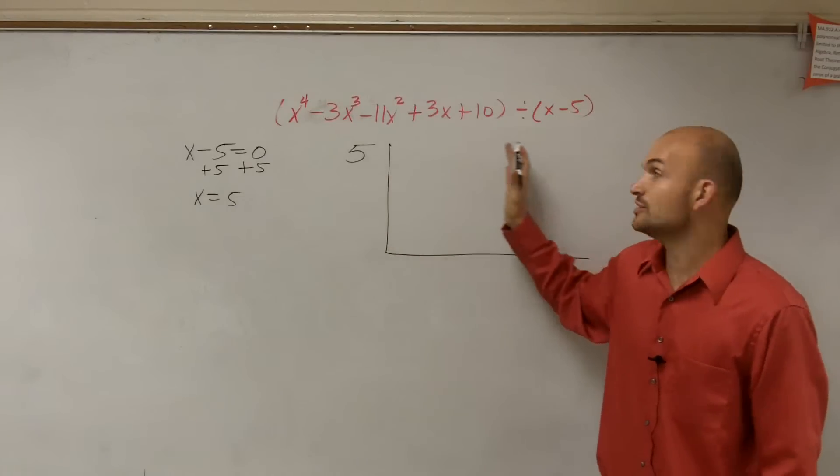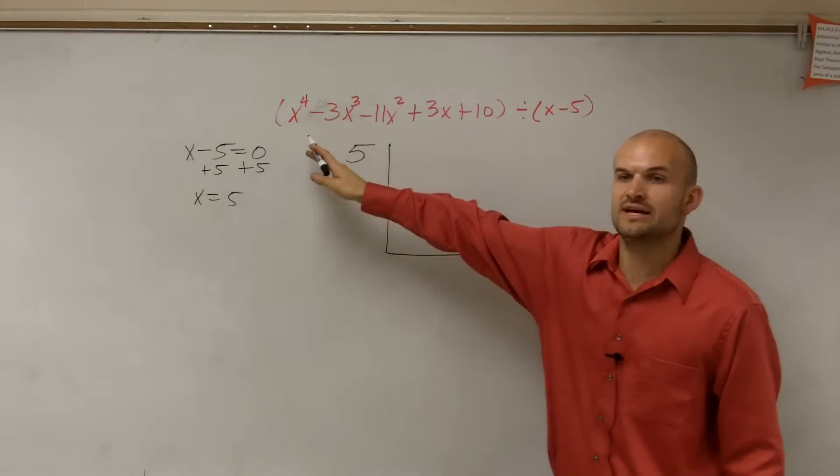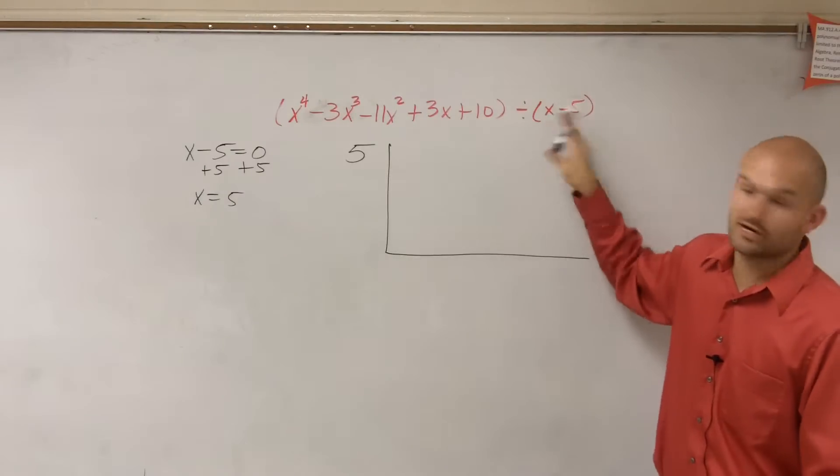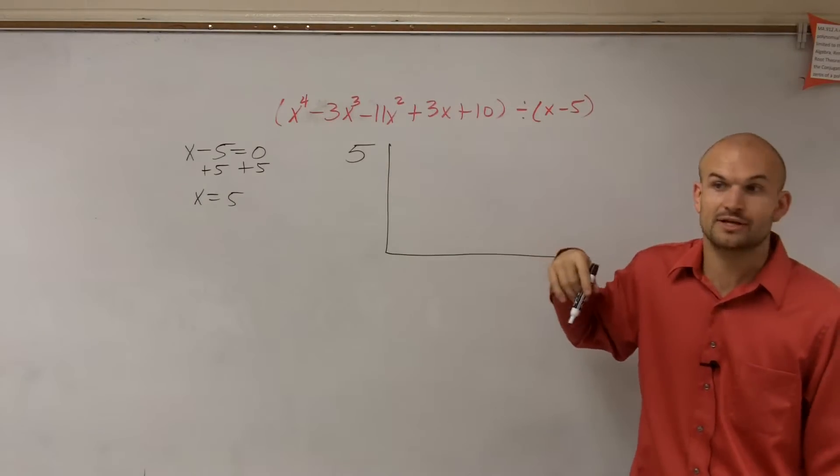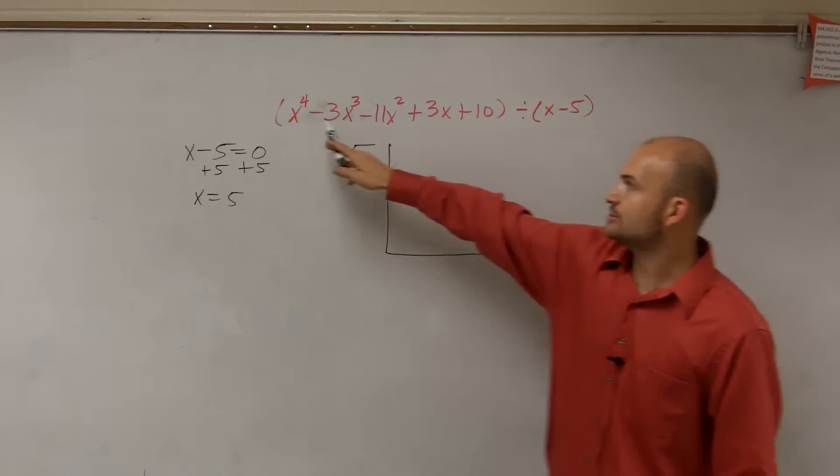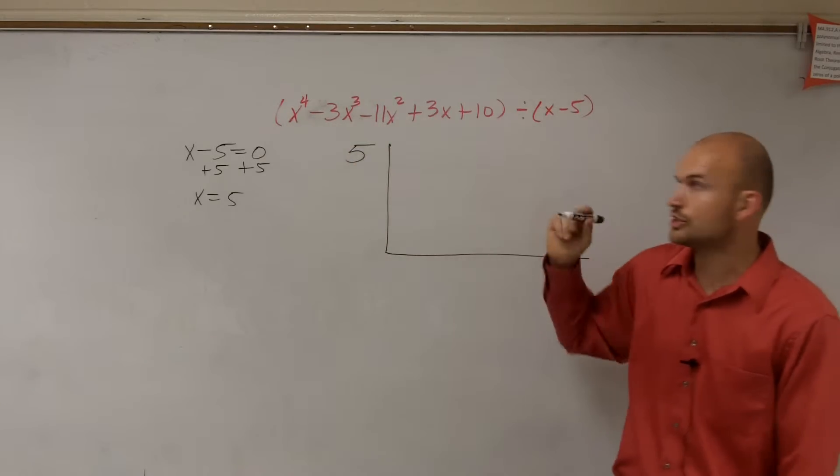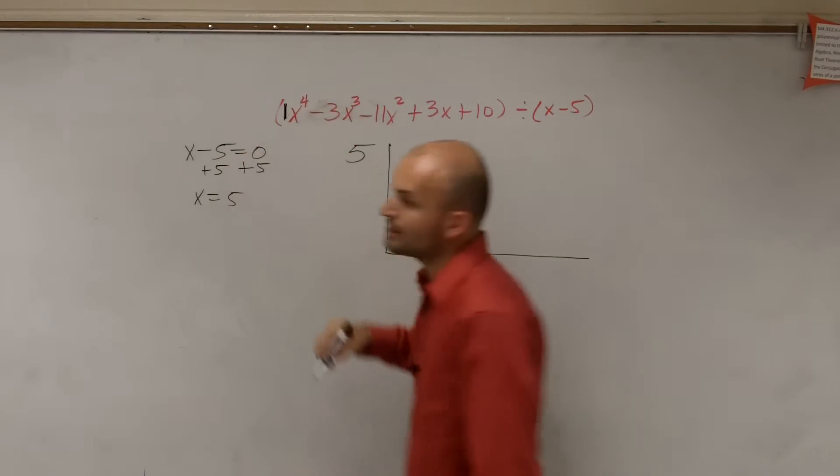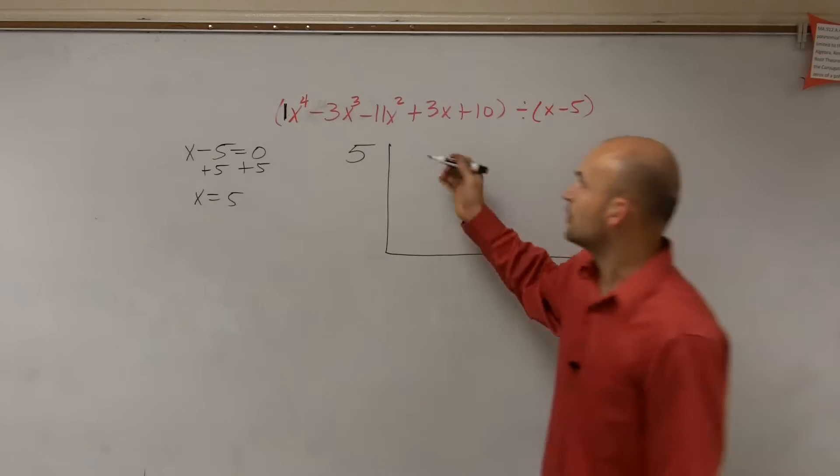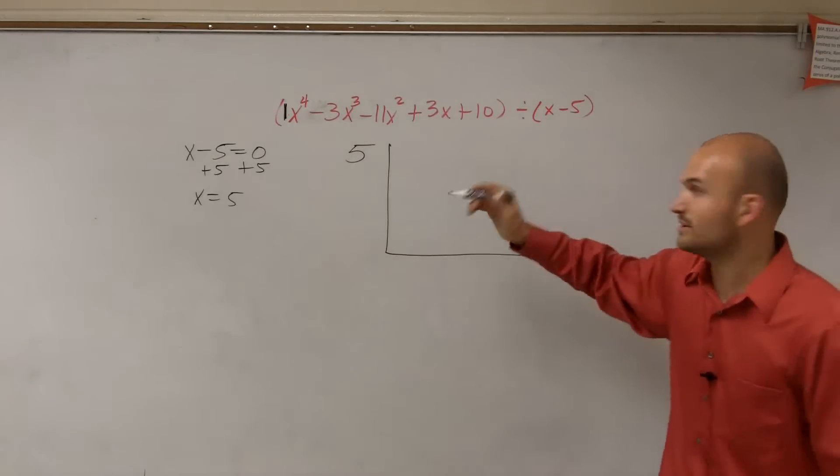So we have this. We make sure that our dividend is in descending order and that our divisor is also a binomial, a linear binomial. Now what we do is we take the coefficient of each term. And since I have a coefficient of each term, I don't need a place value for any of them to put 0 in there.